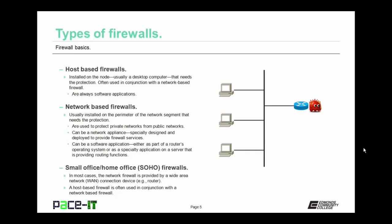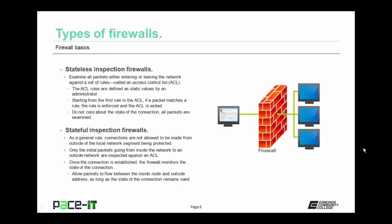It's time to move on to small office, home office firewalls. In most cases, the network firewall is provided by a wide area network connection device — most often the DSL modem or the cable modem. In conjunction with this, a host-based firewall is often used with the network-based firewall. This provides a little bit more protection and allows for more granular configuration of the firewall protection. There are stateless inspection firewalls. These examine all packets either entering or leaving the network against a set of rules called an access control list, or ACL. The ACL rules are defined as static values by an administrator.